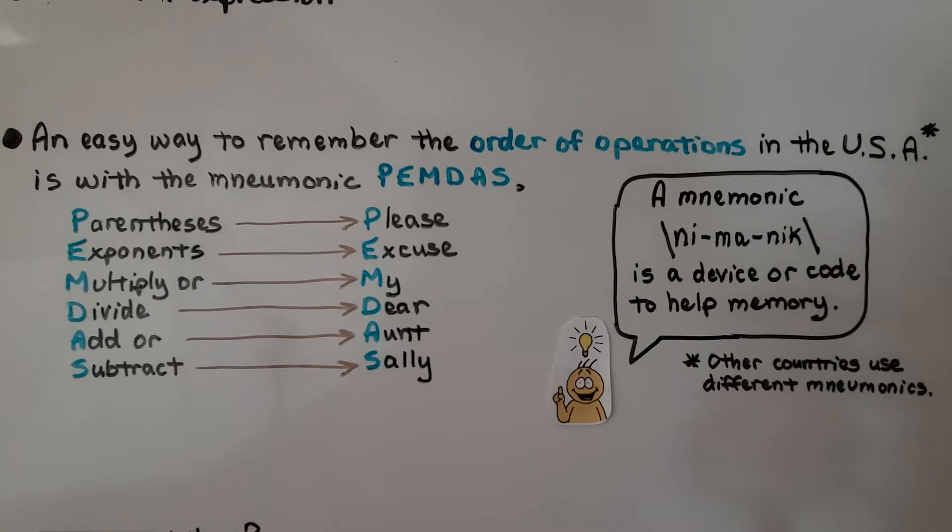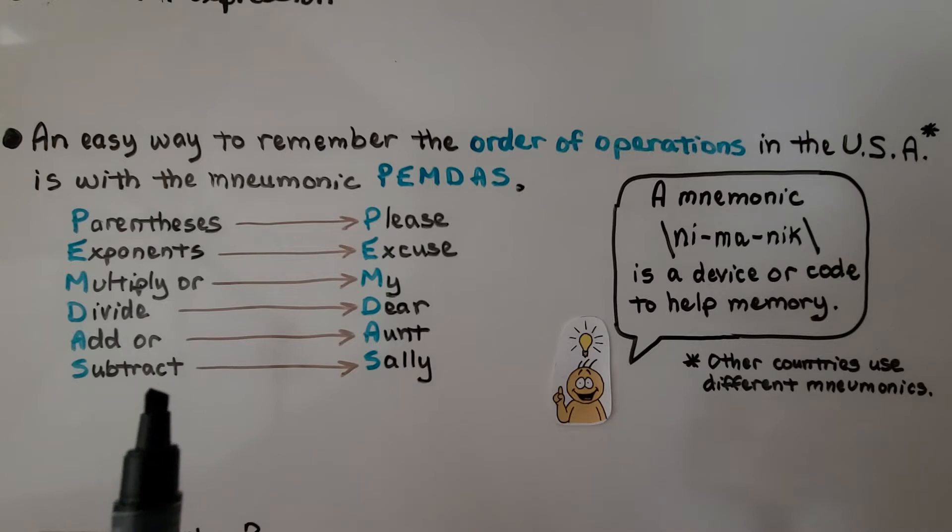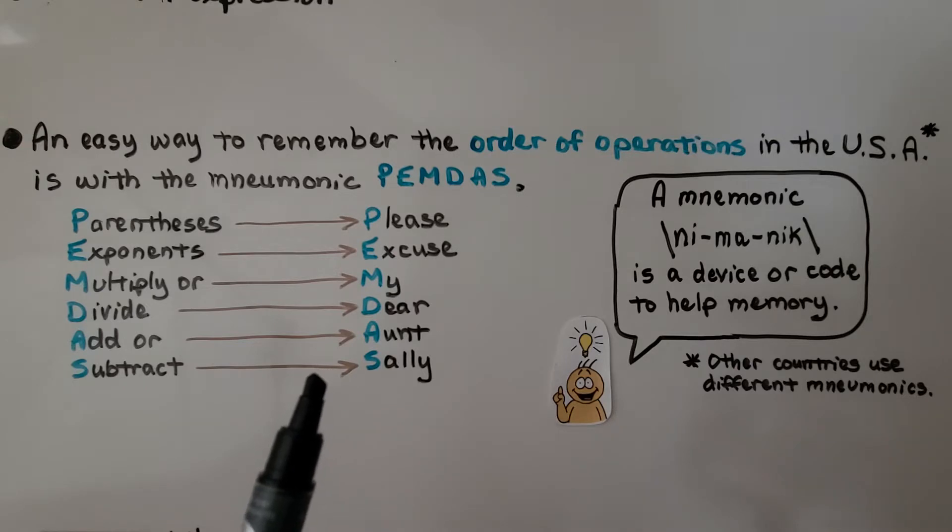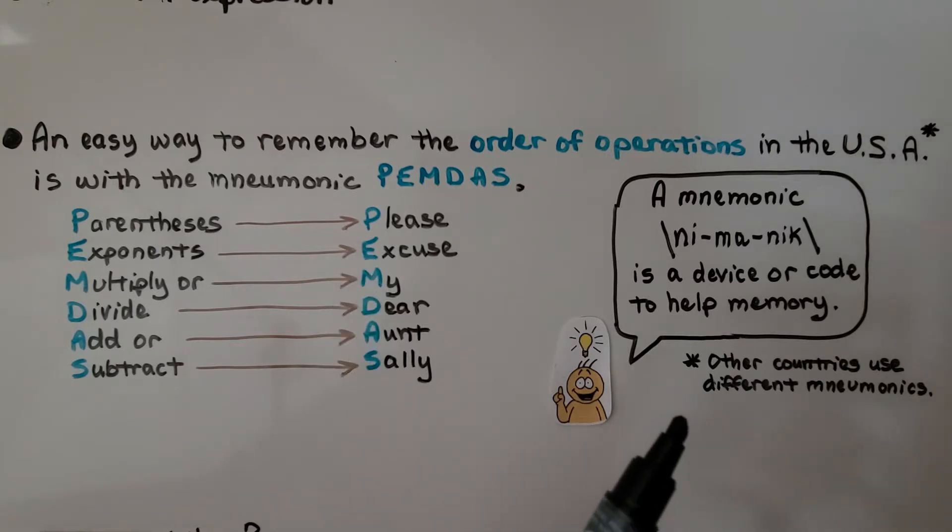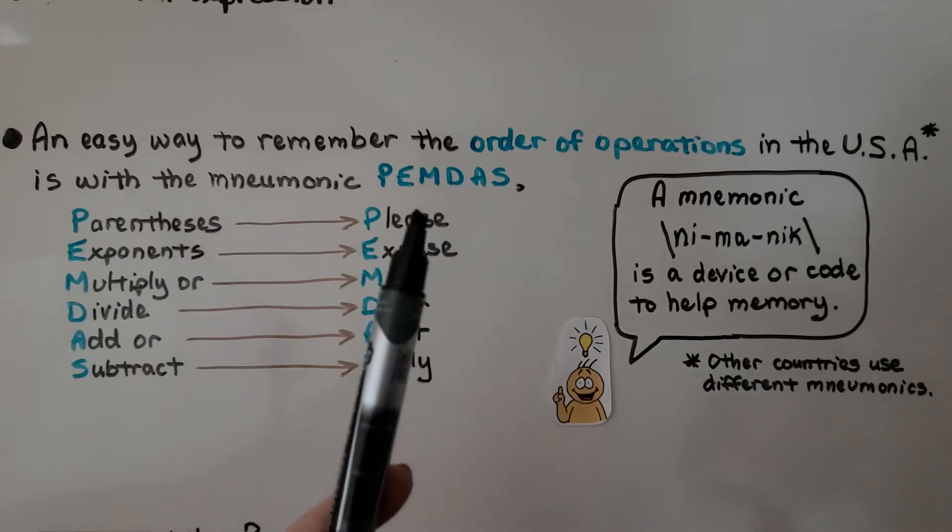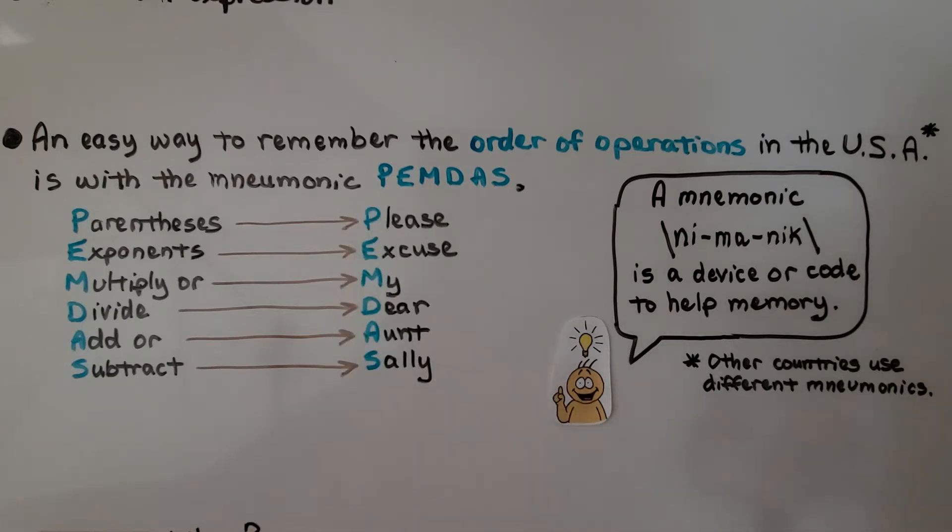An easy way to remember the order of operations in the USA is with the mnemonic PEMDAS. It stands for parentheses, exponents, multiply or divide, add or subtract. And for decades, like close to 100 years or more, they've used Please Excuse My Dear Aunt Sally to help remember the order of operations. A mnemonic is a device or code to help memory. Now, the reason I said in the USA is because other countries use a different one. They might have brackets here, so that might start with a B. I think in Canada and New Zealand they do that.